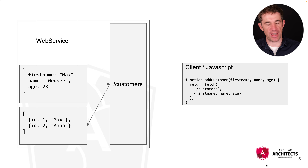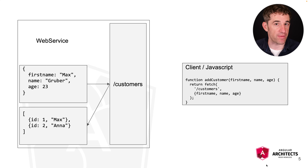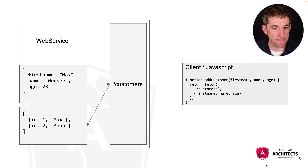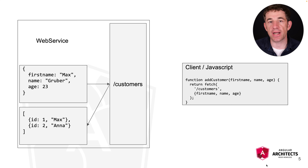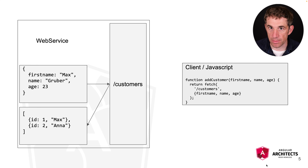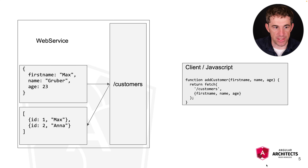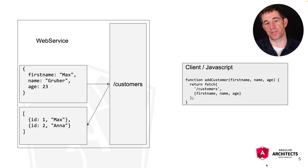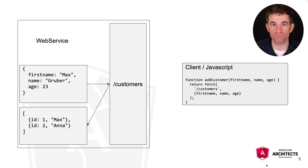We have the following situation: we have our web server, which is usually written in Spring, and on the right side we have our JavaScript client — in our case implemented in Angular. The web service provides a customers endpoint which allows our client to create a new customer. By sending a POST request, it needs to provide JSON data: first name, name, and age. The customer is added, and as a response you get back a list of existing customers.